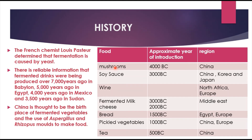Here is a list of fermented foods with their approximate year of introduction and region. Mushrooms were introduced around 4,000 BC in China. Soya sauce is about 3,000 BC from China, Korea, and Japan. Wine is also around 3,000 BC from North Africa and Europe. Fermented milk and cheese are from the Middle East, with cheese around 2,000 BC. Bread is from 1500 BC in Egypt and Europe. Pickled vegetables like sauerkraut are from 1,000 BC in China and Europe. Tea is about 500 BC, again in China.